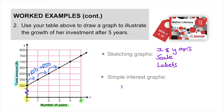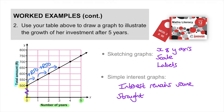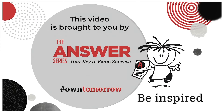To recap simple interest graphs: the interest remains the same, going up by 50 Rand each year, which means we always work with a straight line graph for simple interest. Now that we've completed the worked examples, we'll practice our skills with exercises in the next video, Simple Interest Part 2. Thank you for joining us — we look forward to guiding you through Simple Interest Part 2 in our next video. See you soon.